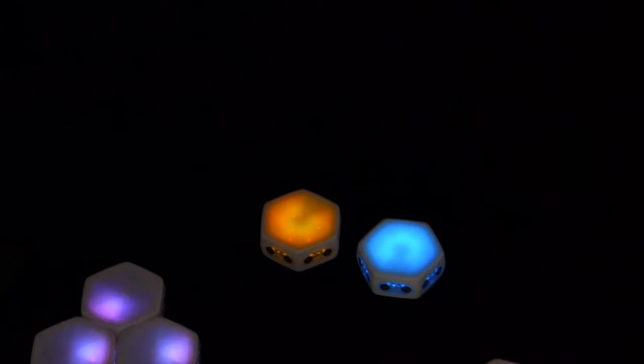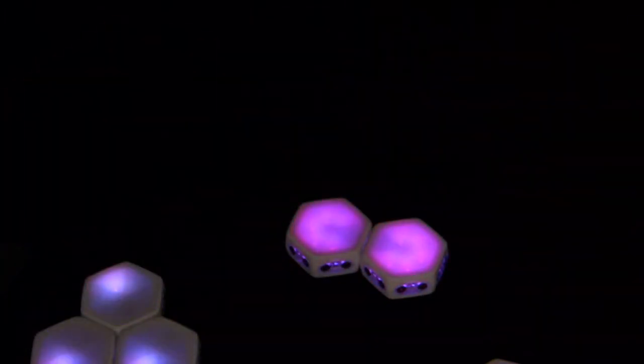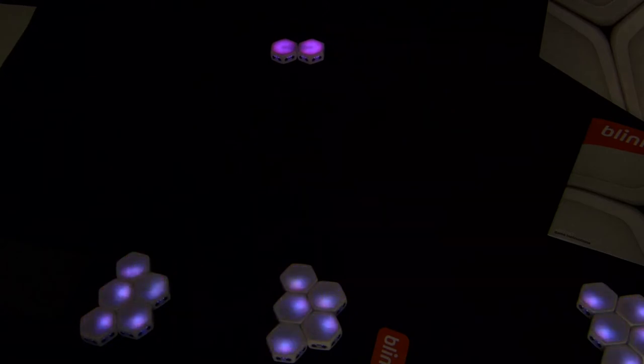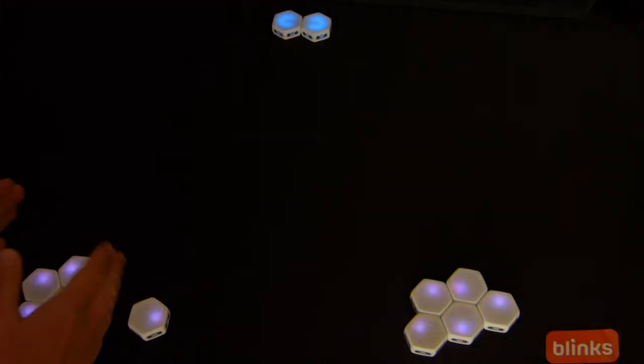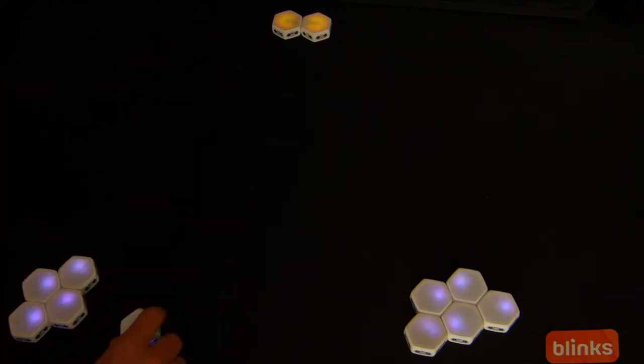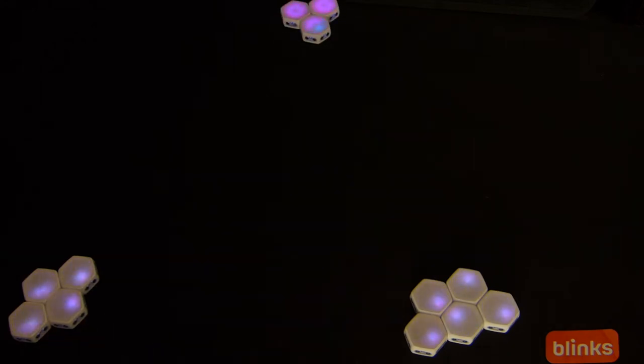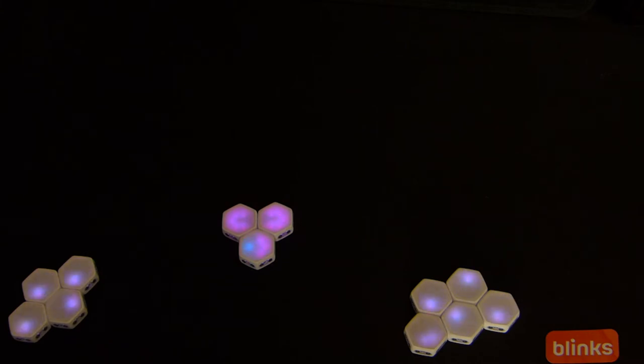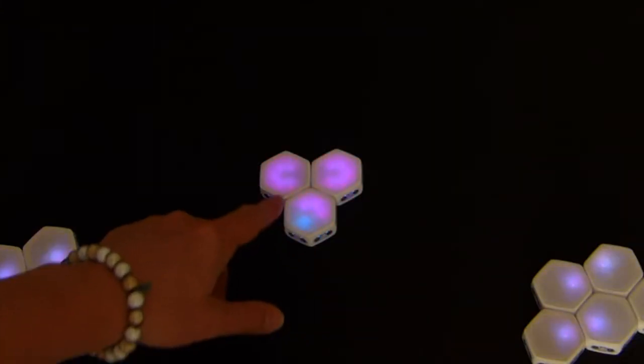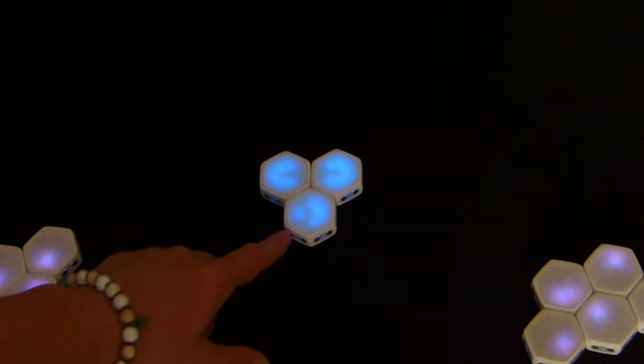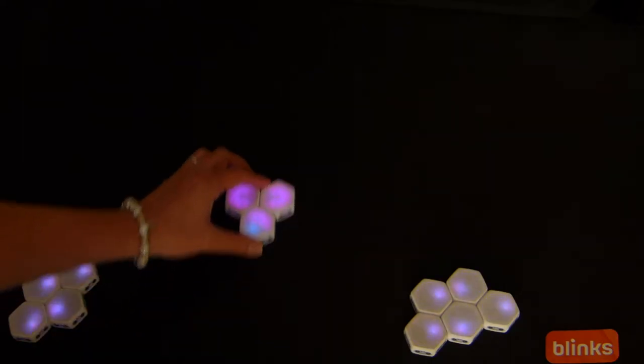So we'll grab 12 Blinks. We'll give each player five each. You could play this two-player, three-player, or even single-player. For this Blinks version of shuffleboard, we need like the jack in bowls, the thing you're aiming at. We're going to take a long press on these two spare ones. They'll start cycling through yellow, blue, and pink. If I put them together, they'll synchronize. That becomes our targets.